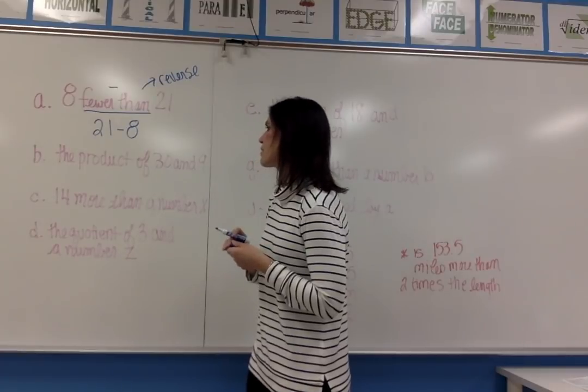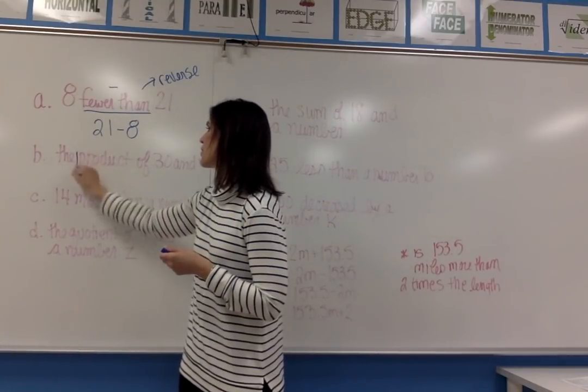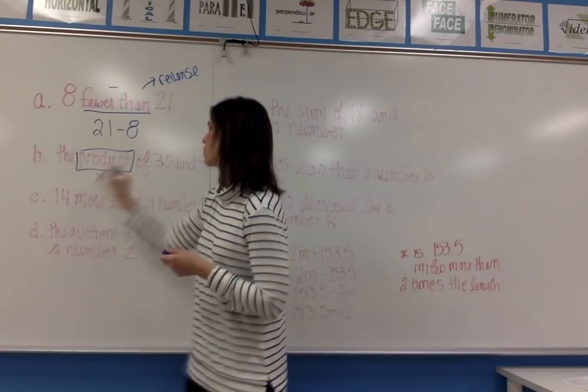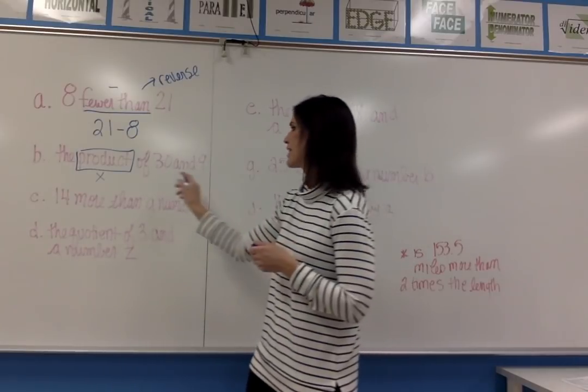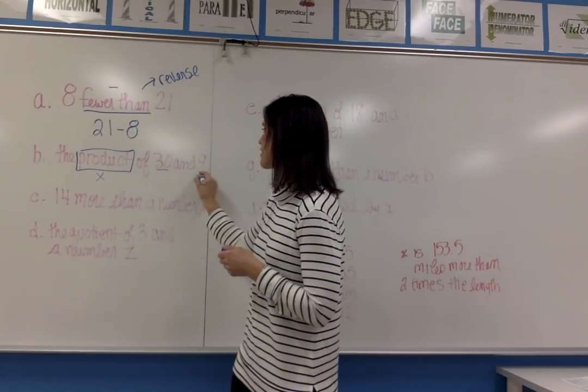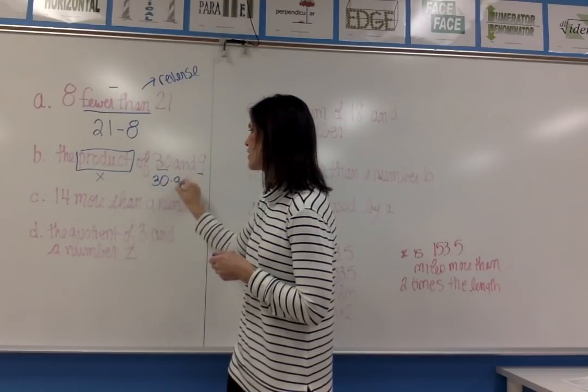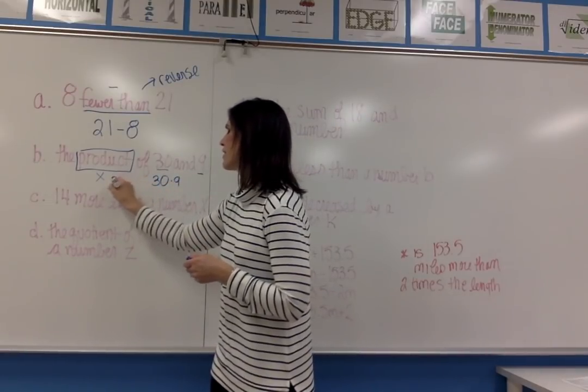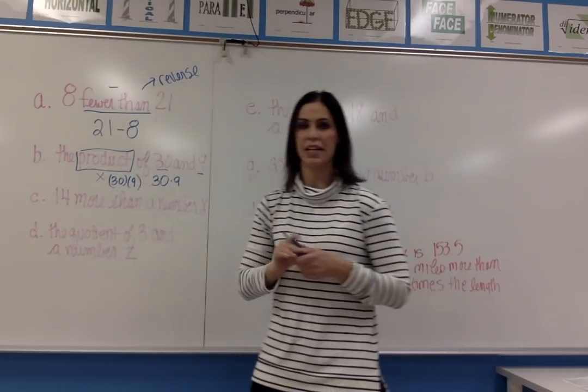Example B says the product of 30 and 9. The keyword product means to multiply, and since 30 comes first, I'm going to write it as 30 times 9. You can use a dot, or another way to write that is to put one or both numbers in parentheses.